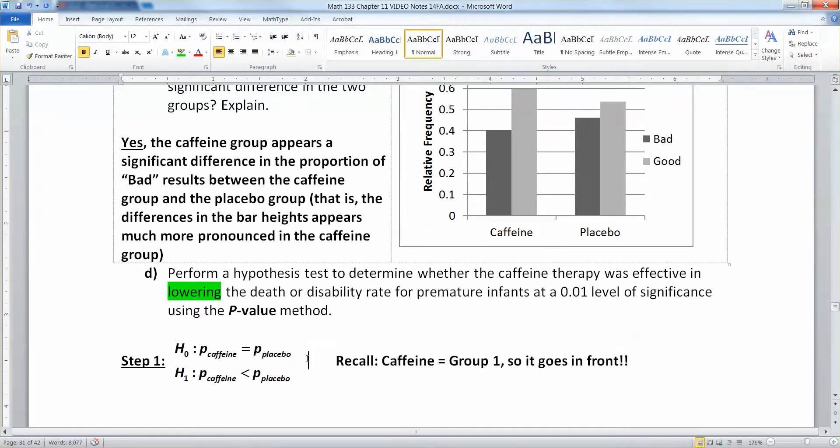Now be careful in this chapter as usual. If the we're lowering peers, that doesn't mean that it's always gonna be a less-than test. It depends on which group you make group one. If I made placebo the group one, then this would actually have been a right-tailed test because you'd reverse the sign down here in the alternative hypothesis. So be extra, extra careful.